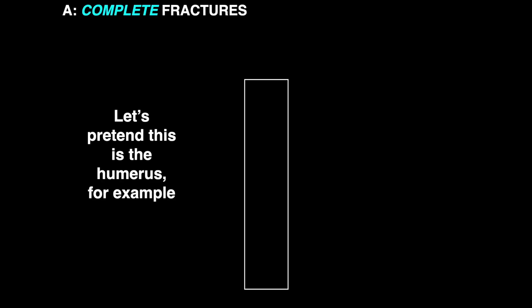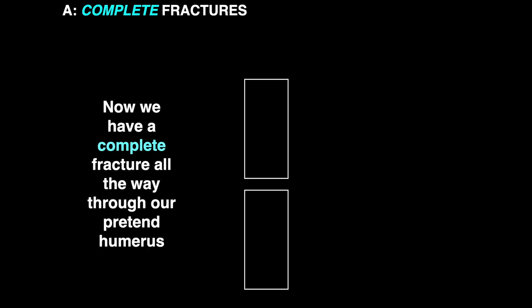So we'll start off with how to describe fractures on x-rays. And the first question we're going to answer is, what type of fracture are we dealing with? So imagine that this rectangle here represents the humerus. Now something has happened to the humerus that causes a fracture. In this case, this has caused a complete fracture all the way through the humerus.